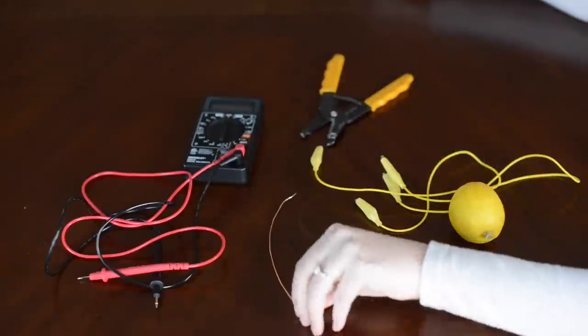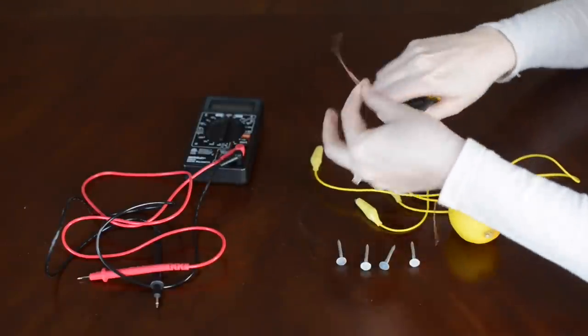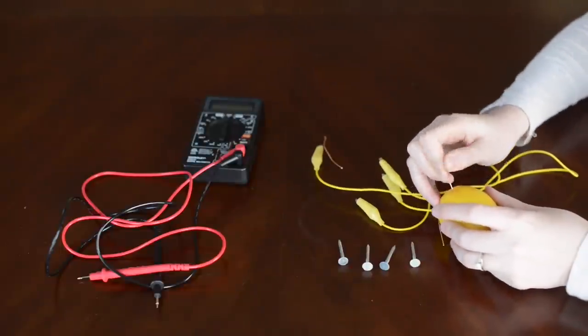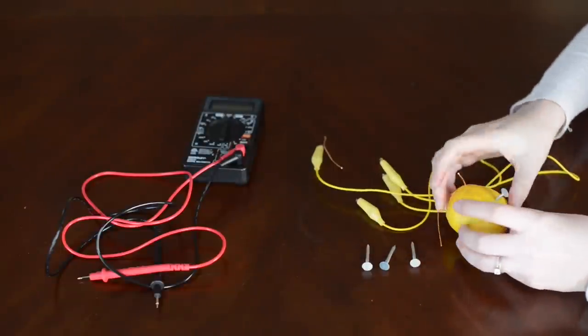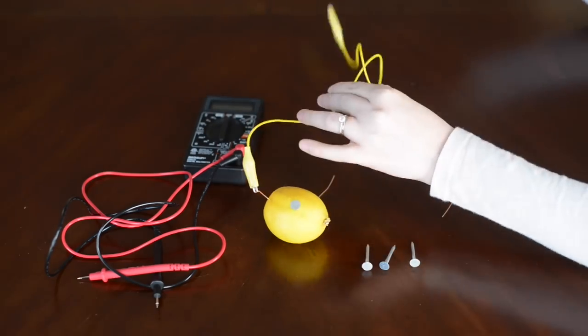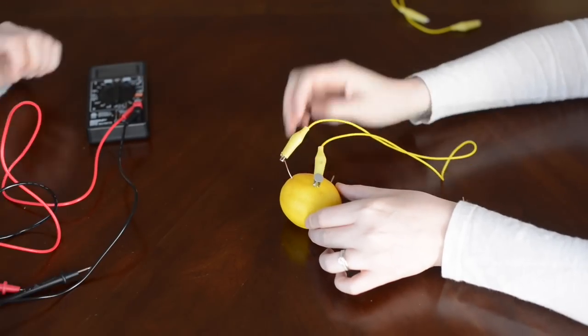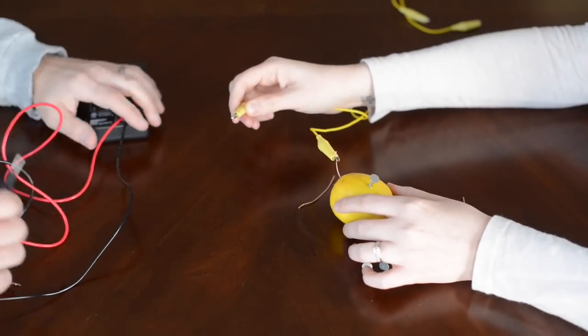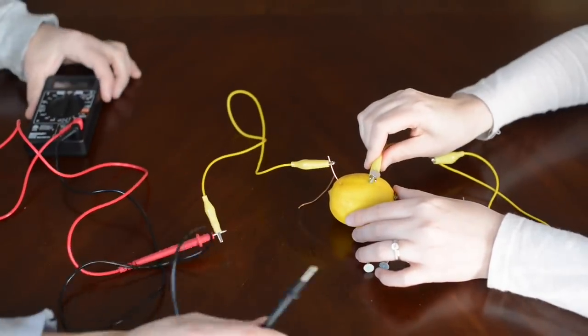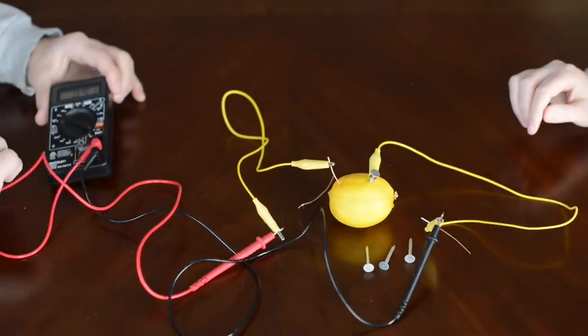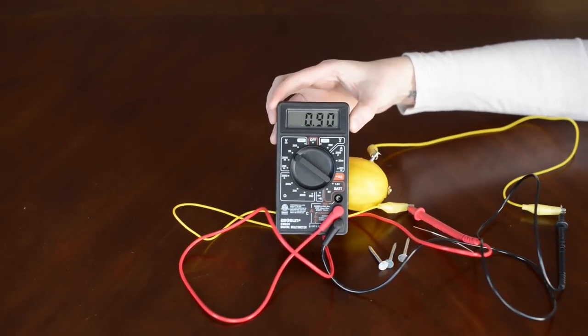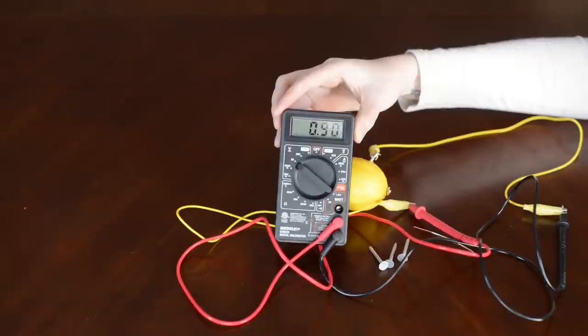So what you're going to do is just cut a piece of copper wire. And you only need one for each lemon. We're only using one lemon for this. And then all you do is you put the copper wire and the nail in your lemon. And then you hook up a test lead to the copper wire and then to your multimeter, and then you hook it up to the nail and then to your multimeter to create a current.